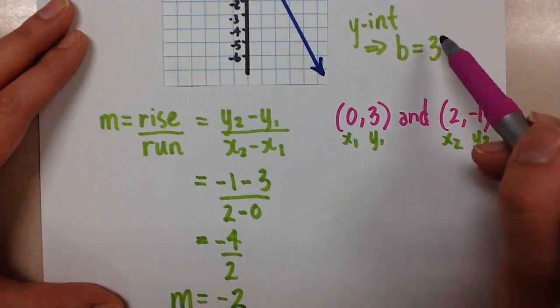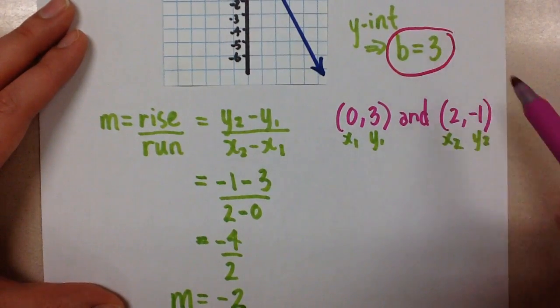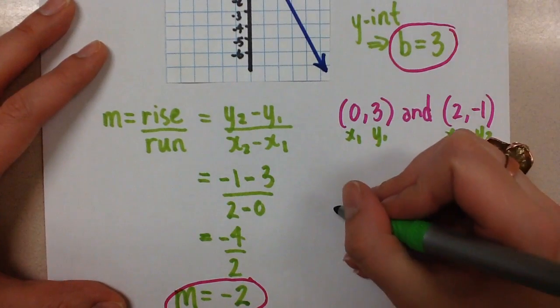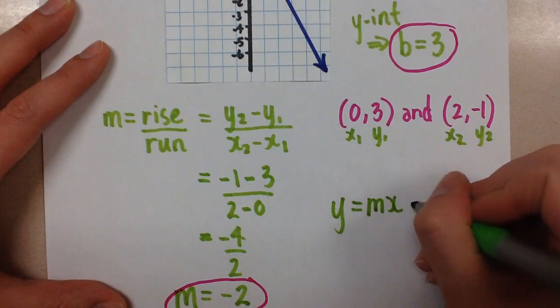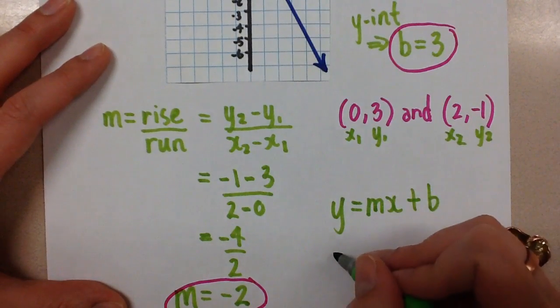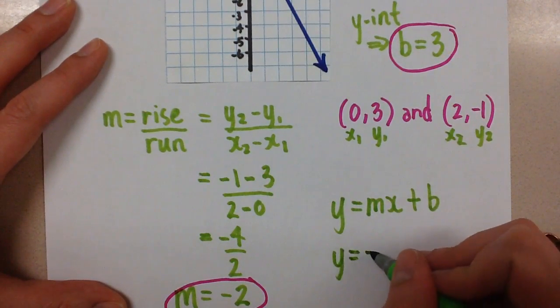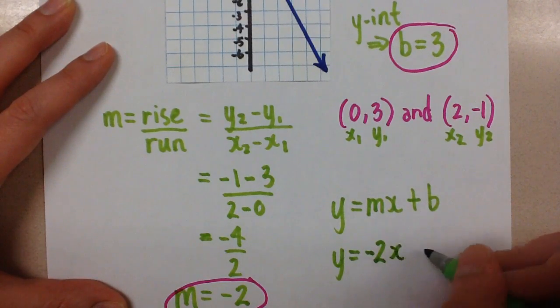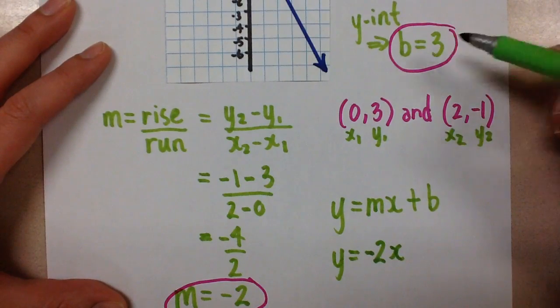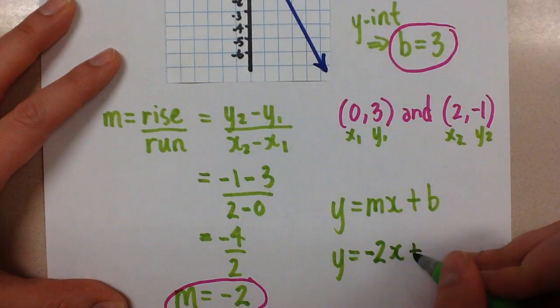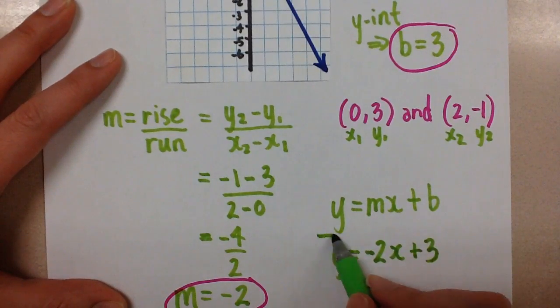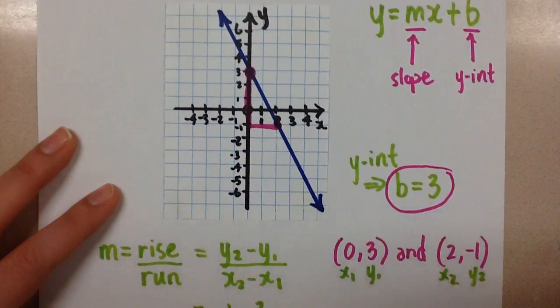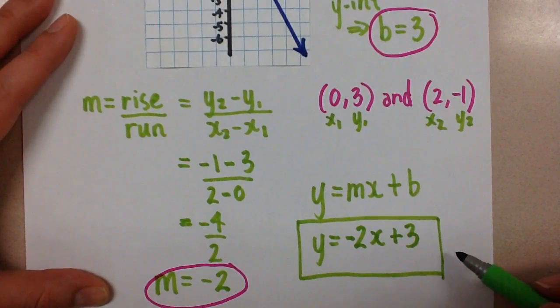So now, combining the y-intercept of 3 and the slope of negative 2, I'm going to take my equation, y equals mx plus b, and sub in negative 2 for the slope, which is the mx. And then the b is positive 3, so I will put a plus 3 here. And this is the equation of the line from that graph in slope y-intercept form.